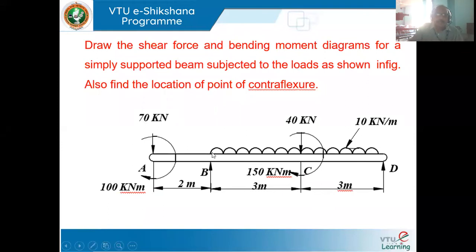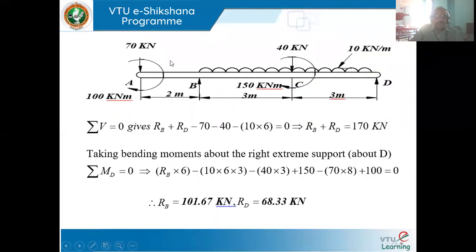Next, let us consider one more beam for which we have to draw the shear force and bending moment diagram, and locate any point of contraflexure that exists. This beam is subjected to a combination of point loads, uniformly distributed load, and also a couple. This is the load diagram.